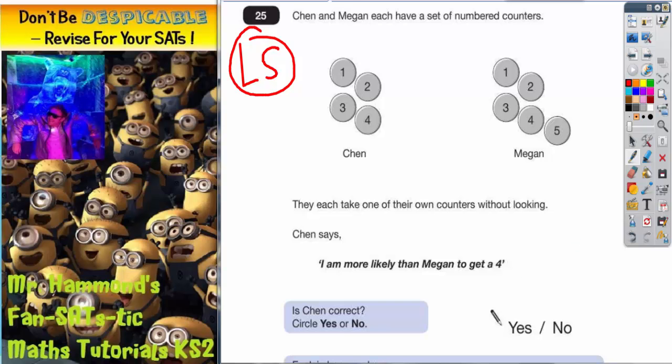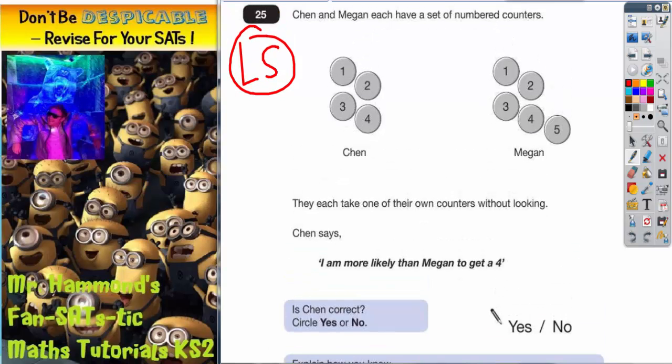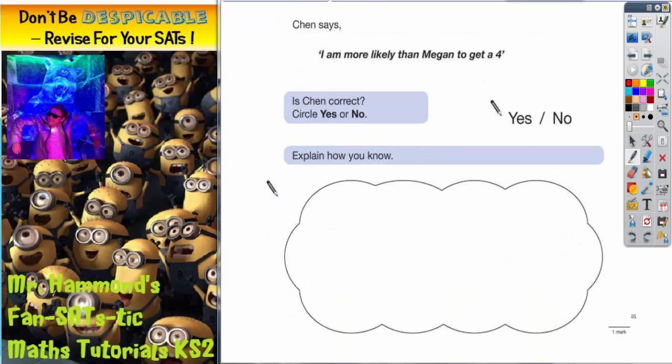Is Chen correct? Yes or no. But you've got to explain how you know. If you just circle yes or no and guess, even if you guess correctly, you won't get any of the marks. It's all about this word, explain. If you don't have an explanation, you won't get the marks.